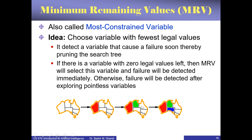South Australia cannot be green because it is already bordering Northern Territory which is green, and it cannot be red because it borders Western Australia which is already red. So the only option is blue. Whereas Queensland has two remaining values — it cannot be green but can be red or blue. This heuristic says select South Australia first because it has the minimum remaining legal values, which is only blue.